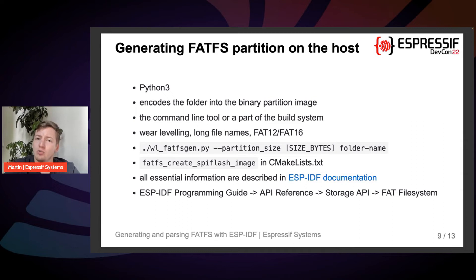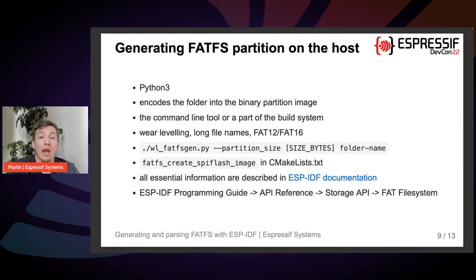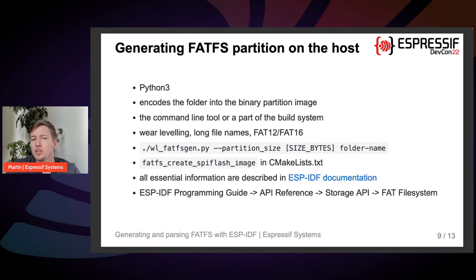The partition generator served as part of ESP-IDF is a Python 3 based tool providing complete functionality for encoding a local folder on the host into a binary FAT file system image. The tool can be used as a command line Python tool or, even more conveniently, as an integrated part of our build system as a CMake function that users add to the project's CMakeLists.txt file. The tool can generate images with wear leveling, short or long file names, and FAT12 and FAT16. Extending functionality to FAT32 is an objective of future work.